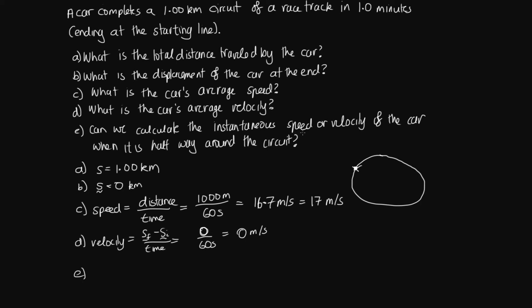With the velocity, the instantaneous velocity as it goes round is not going to be 0 at most places. If it was 0 at a place, then it wouldn't be moving at all. And so we really can't calculate the instantaneous velocity. We'd also need to know more about the shape of this circuit, which we're not told about in the question.